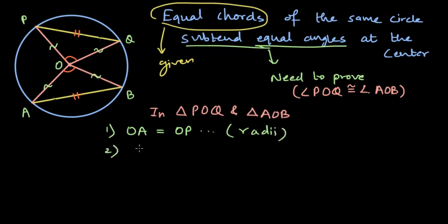Next corresponding element pair that I can consider is another radii pair. So I had considered OA and OP. So now we can consider OB and OQ. So OB is equal to OQ, and these are also radii.